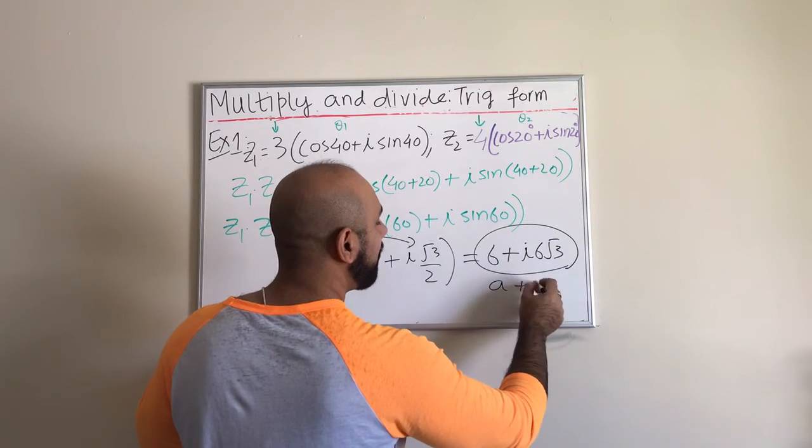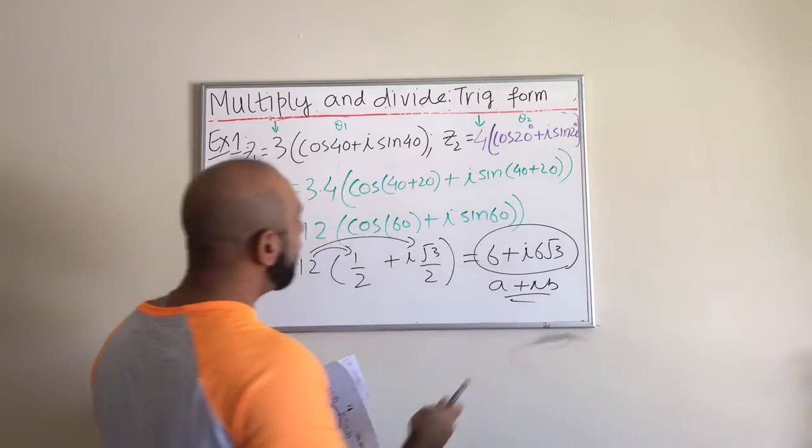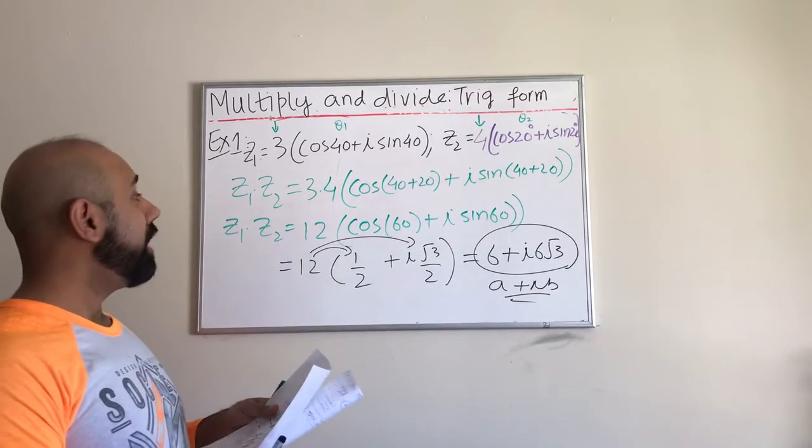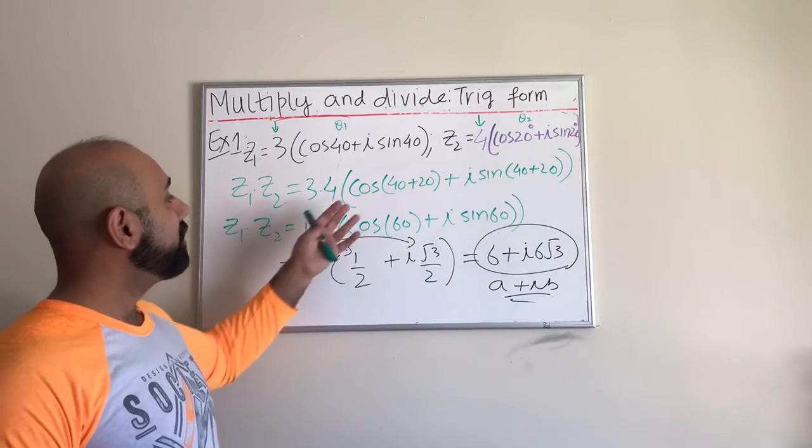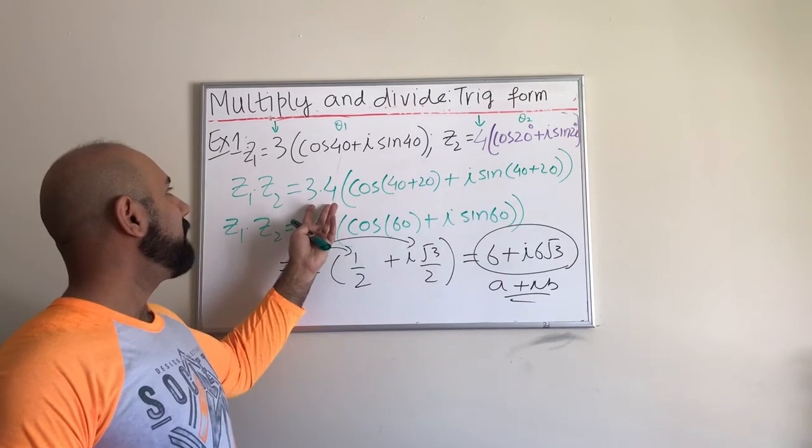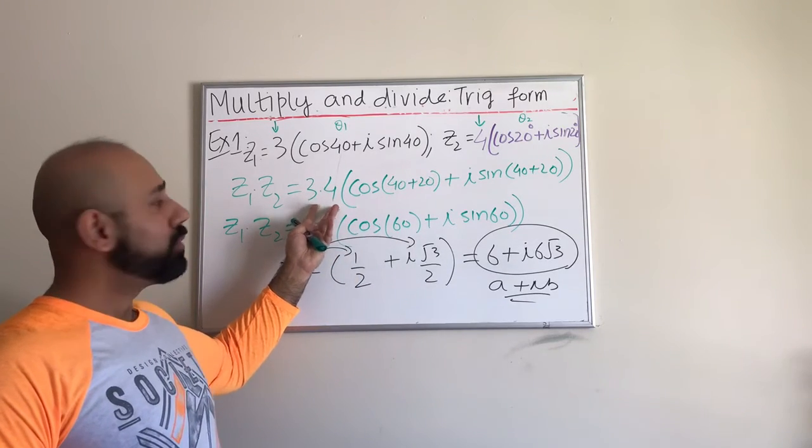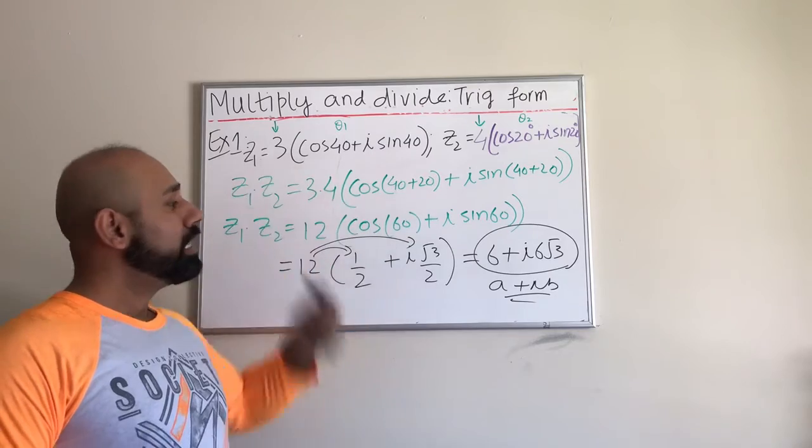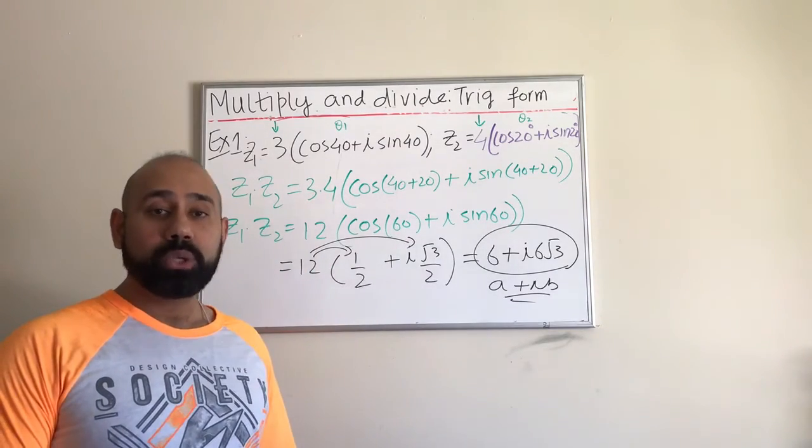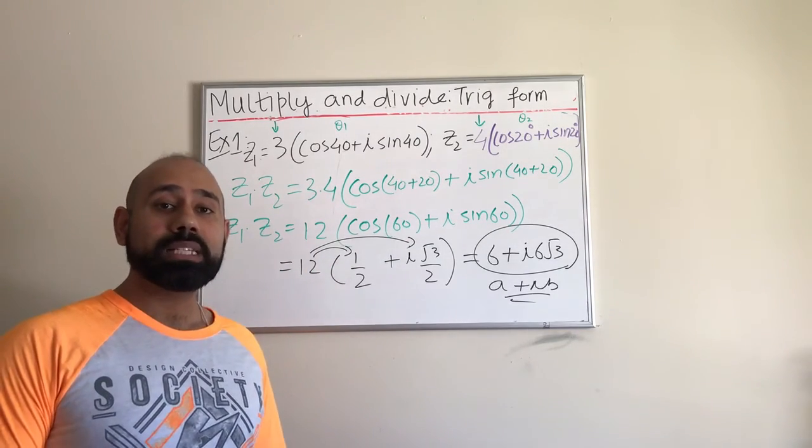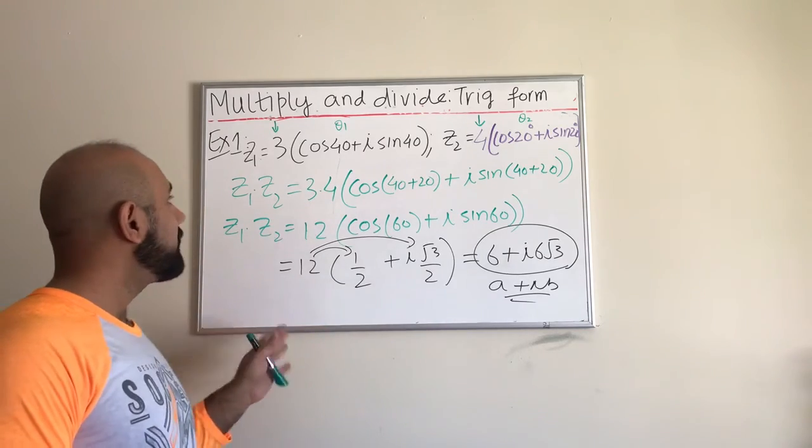So this is in the a plus ib form. You start by multiplying these using the fact that when we take the product, you multiply the respective absolute values and you take the sum of the angles. This is basically how we multiply two complex numbers which are provided to us in a trig or polar form.